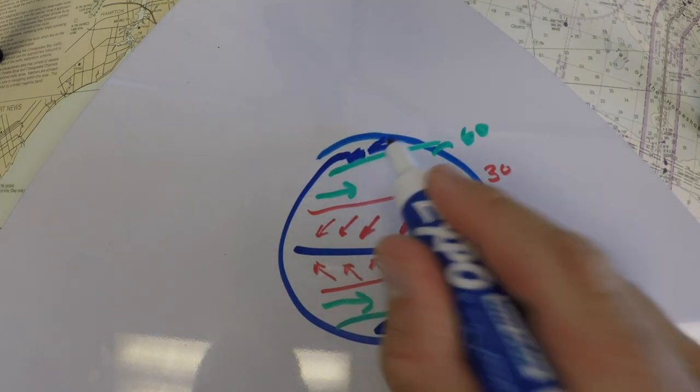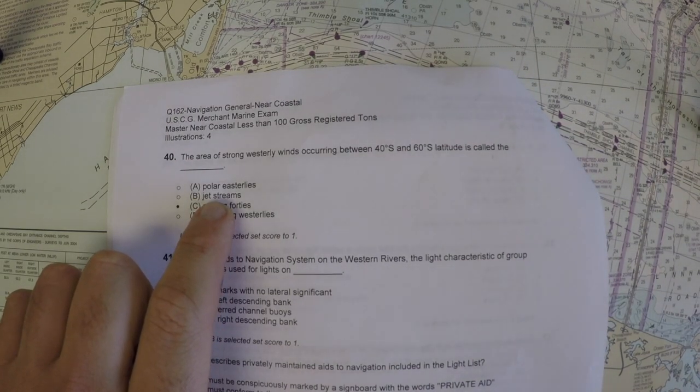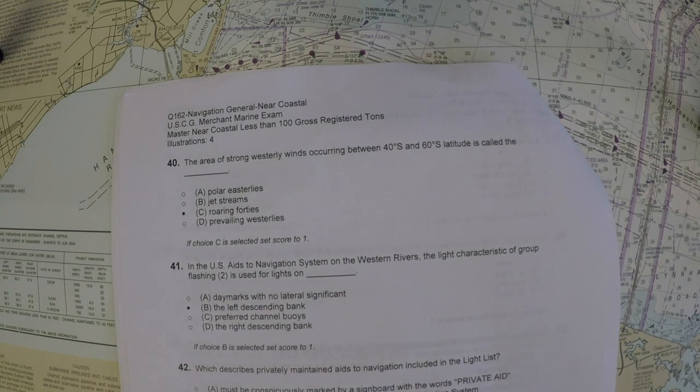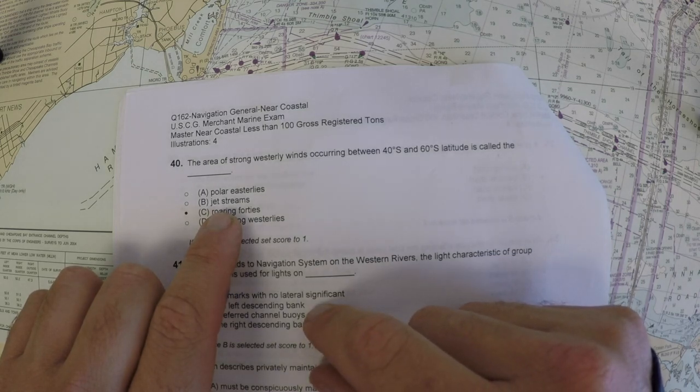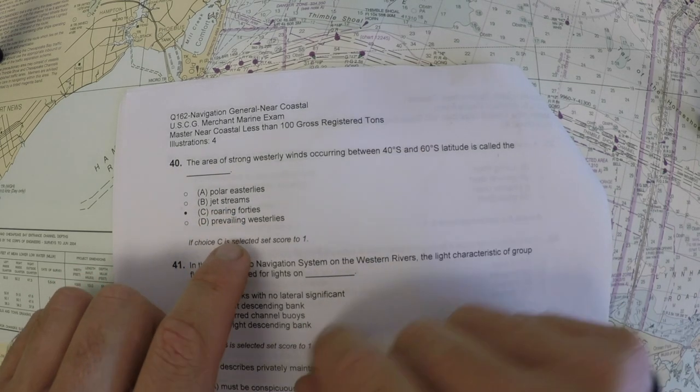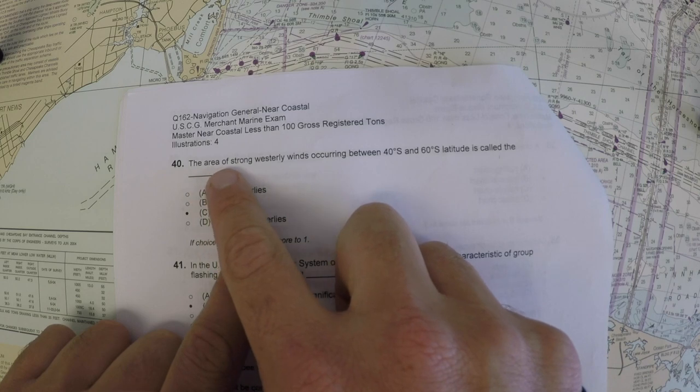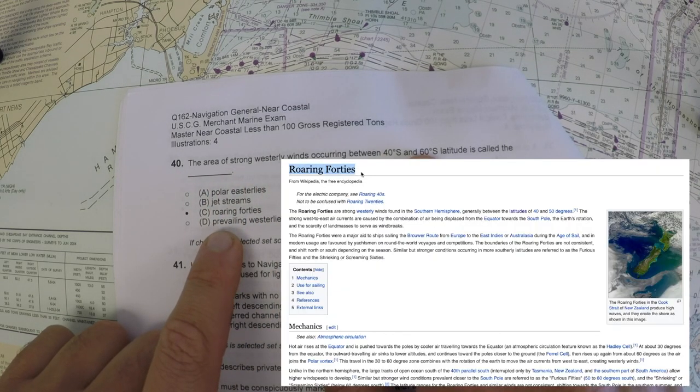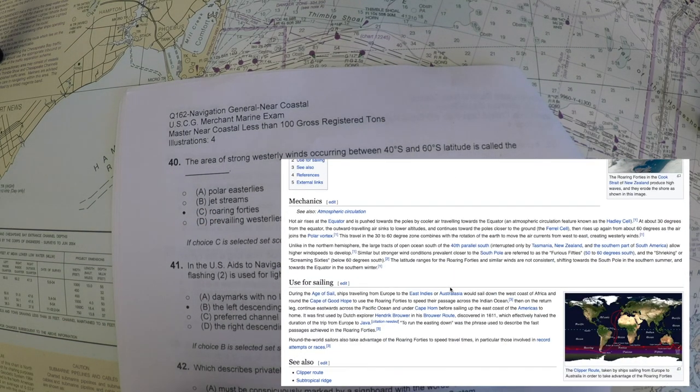You can look this up on the internet if you've got questions. To refer to the answers, the polar easterlies would not be correct—those are generally above 60 degrees latitude in either hemisphere. The jet streams refer to winds up high in the atmosphere, so that wouldn't apply. The prevailing westerlies are generally between 30 and 60. However, there's a particularly strong westerly wind in this vicinity. You can see why that answer might be correct, but the nickname for it is the Roaring Forties. It is found in Bowditch, but Wikipedia does a better job explaining it if you want to read about it.